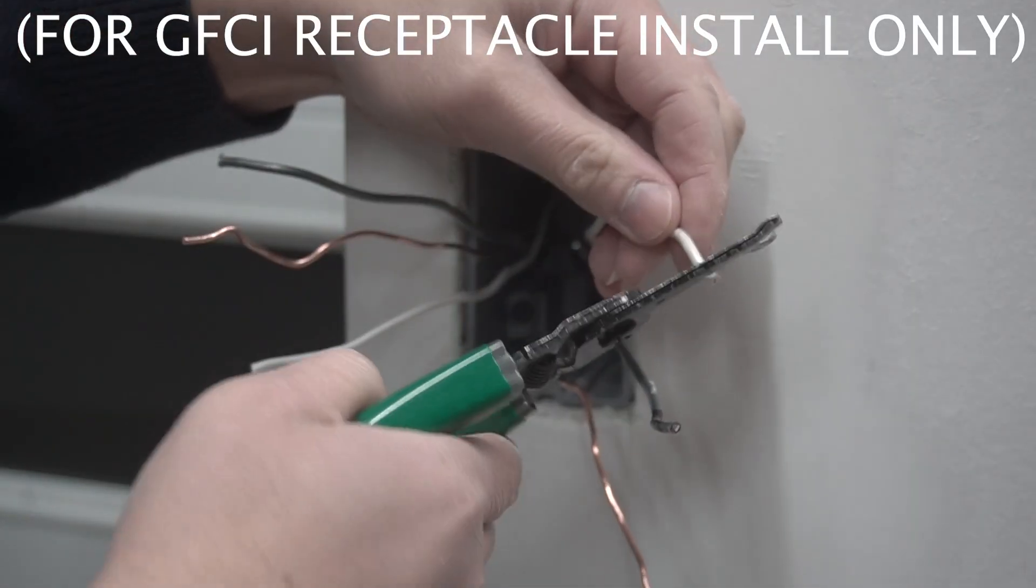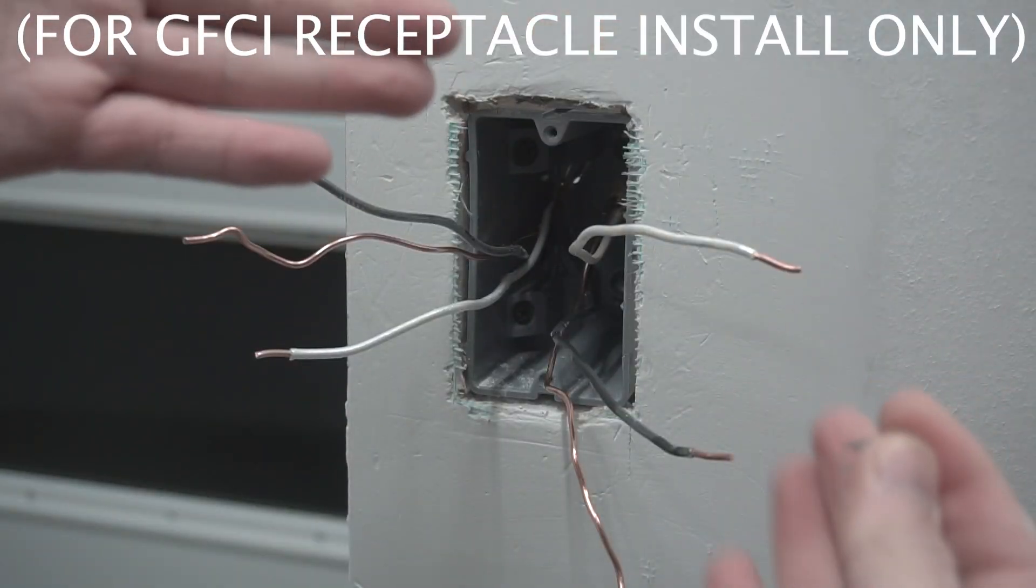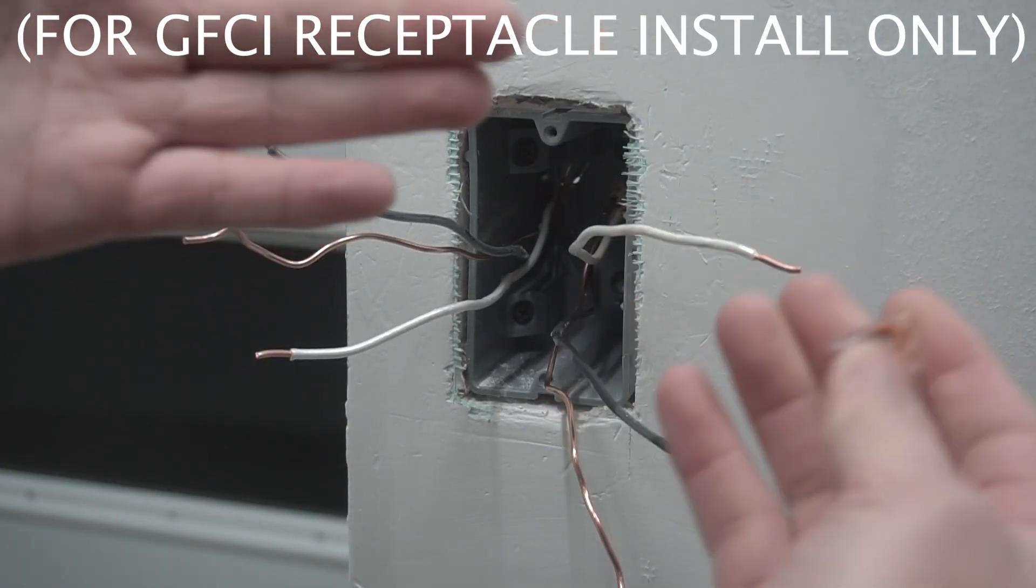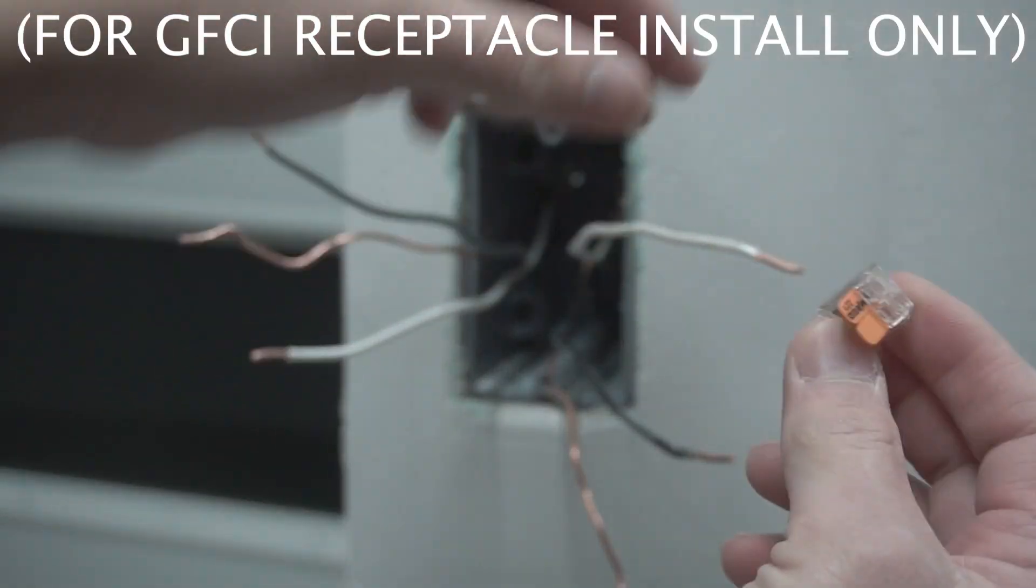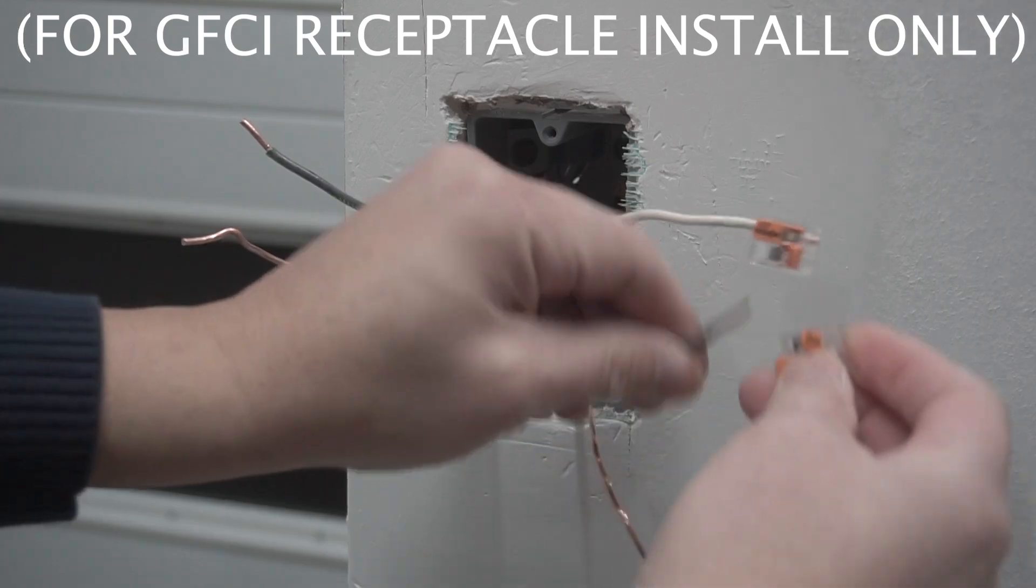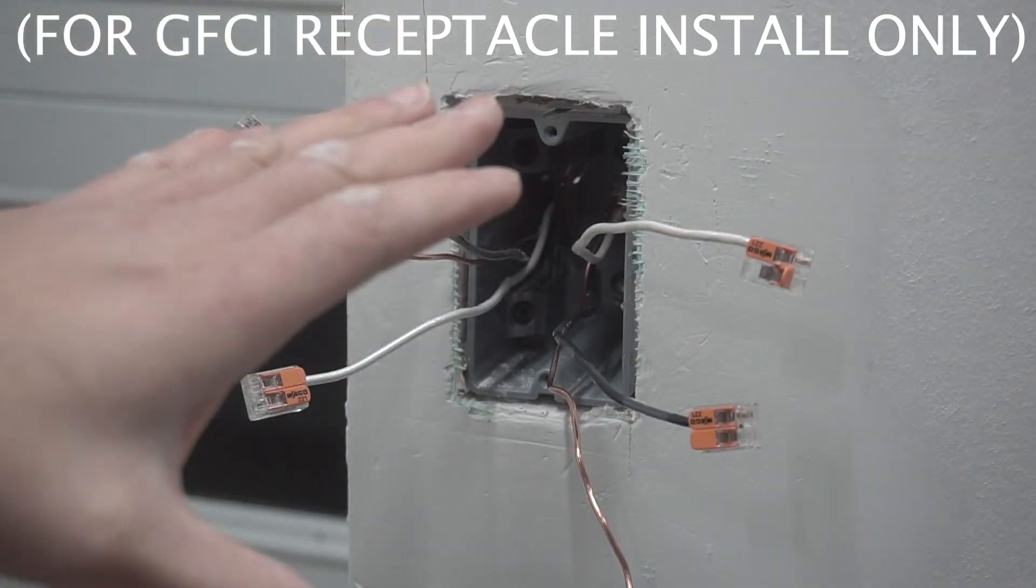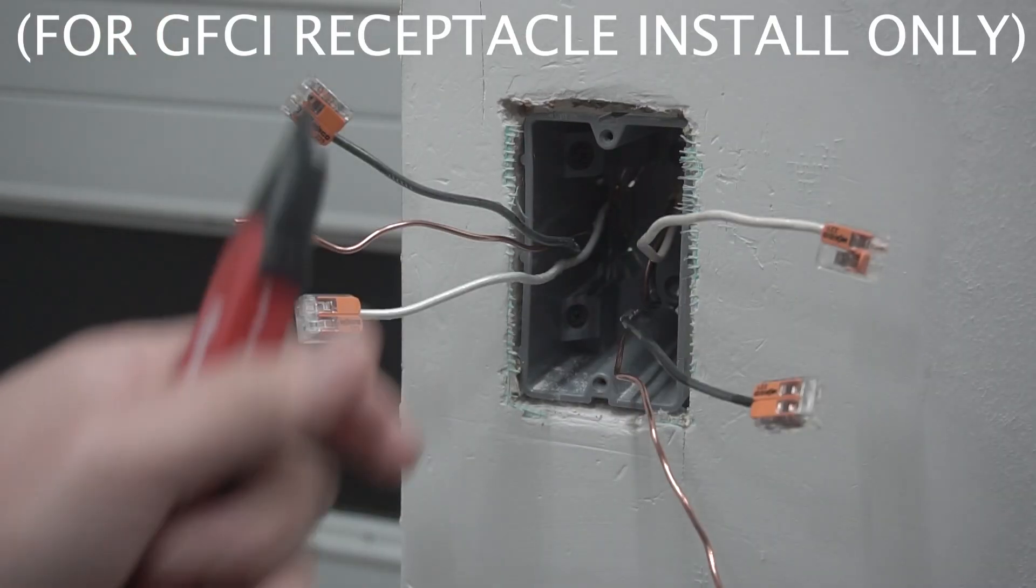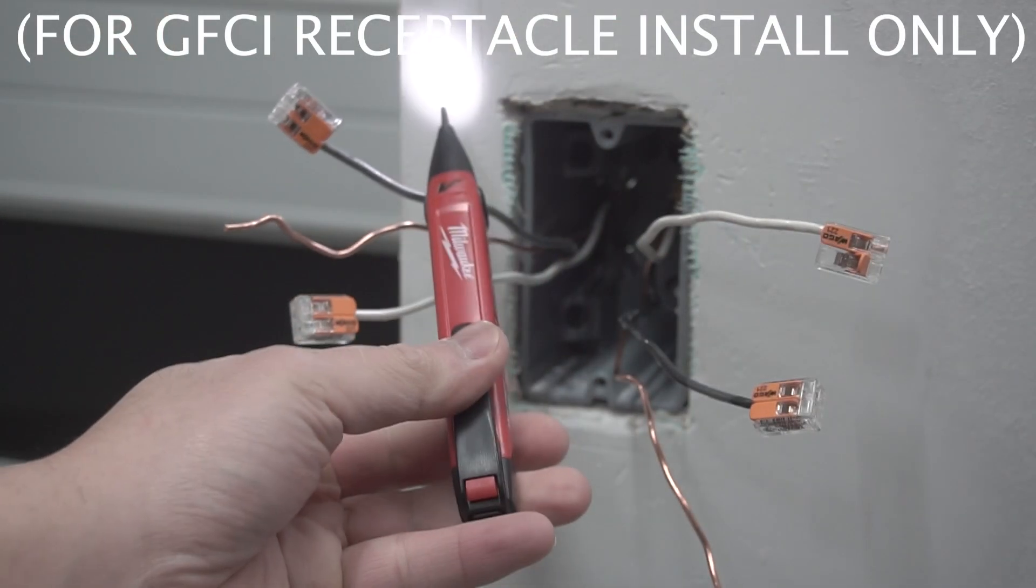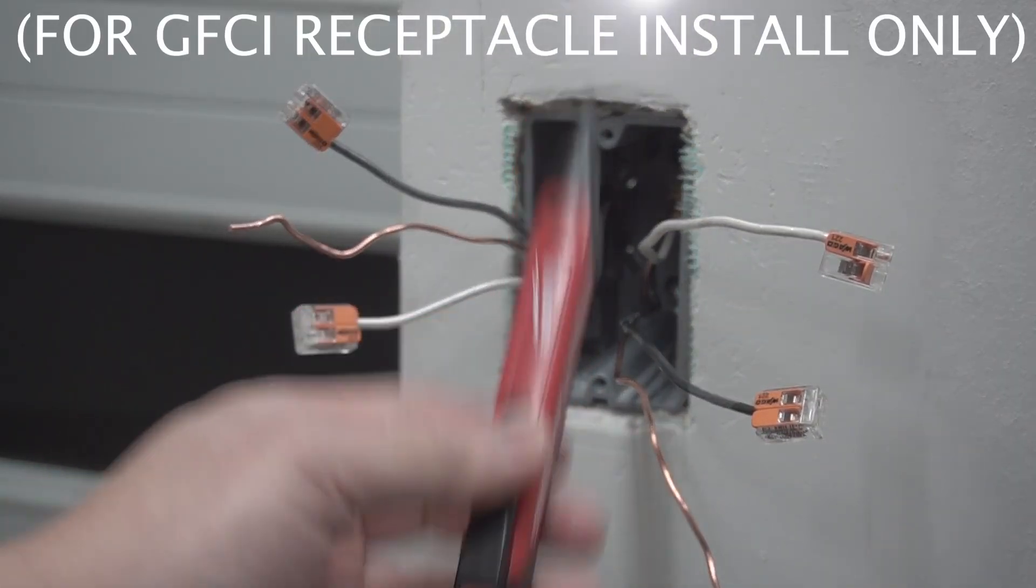So cut off each end like this. We're going to strip the 12 gauge. You can use any connectors that you want to cap these off. You can use a wire nut or what I like to use are these Wagos. They're super easy. Lift the lever and just close it up just like that. I'm only going to be capping the neutral and the hot.